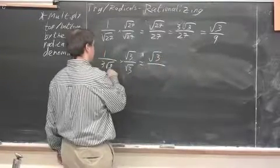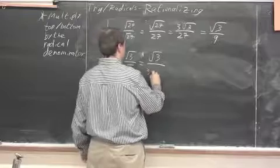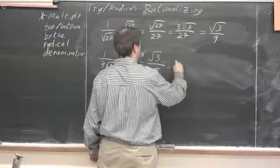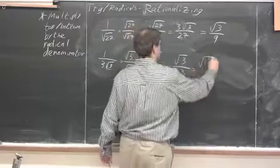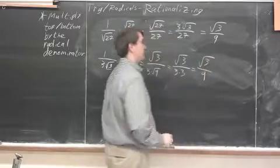3, or rather, radical 3 times radical 3 is radical 9. Radical 3 over 3 times 3. Radical 3 over 9.